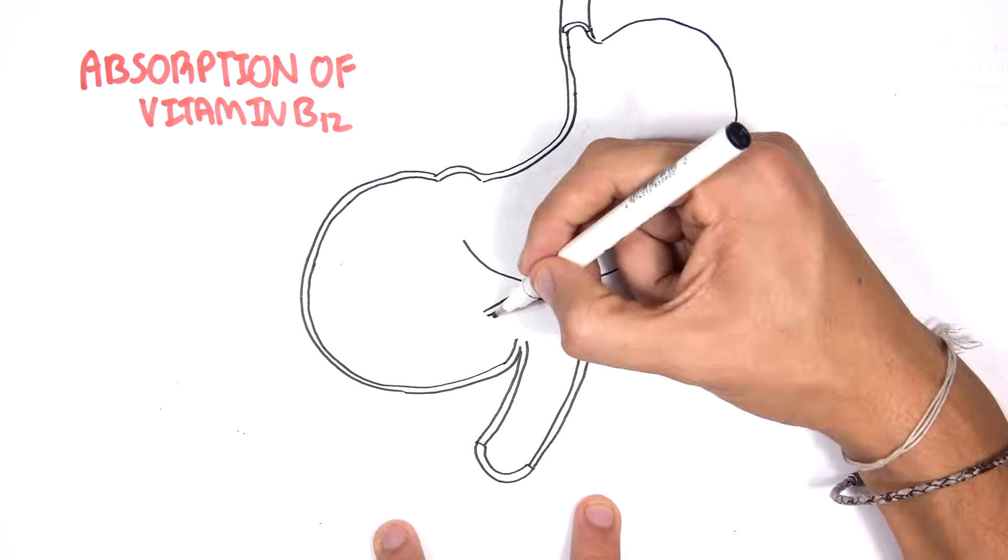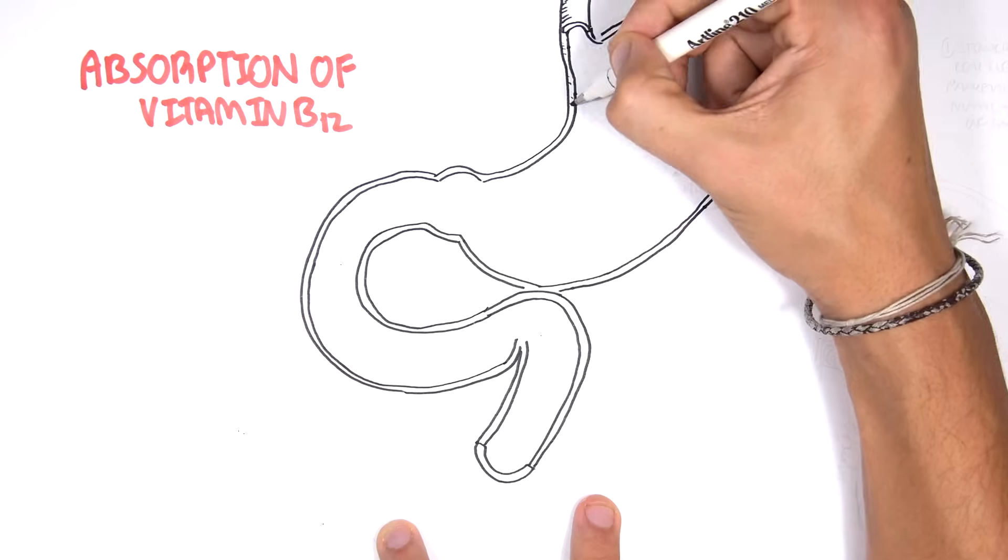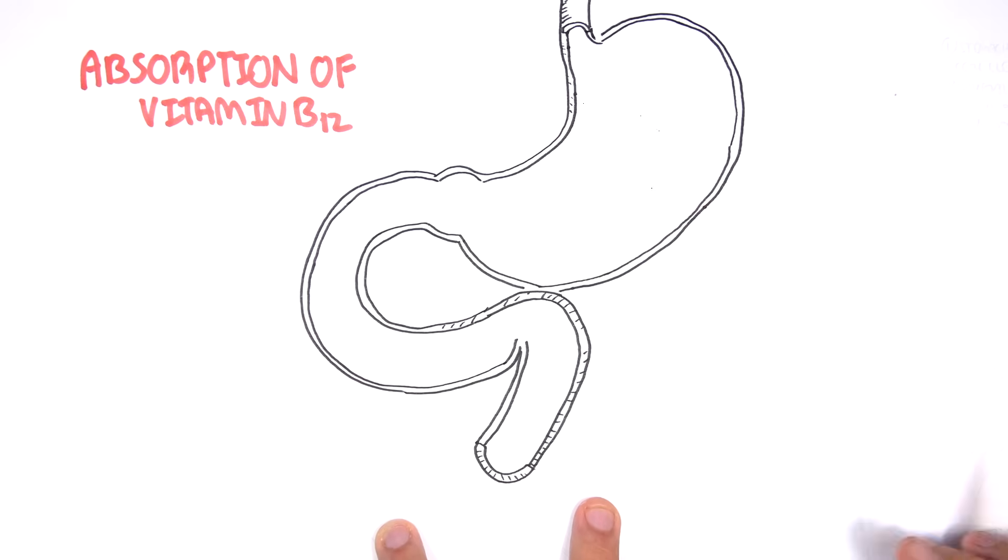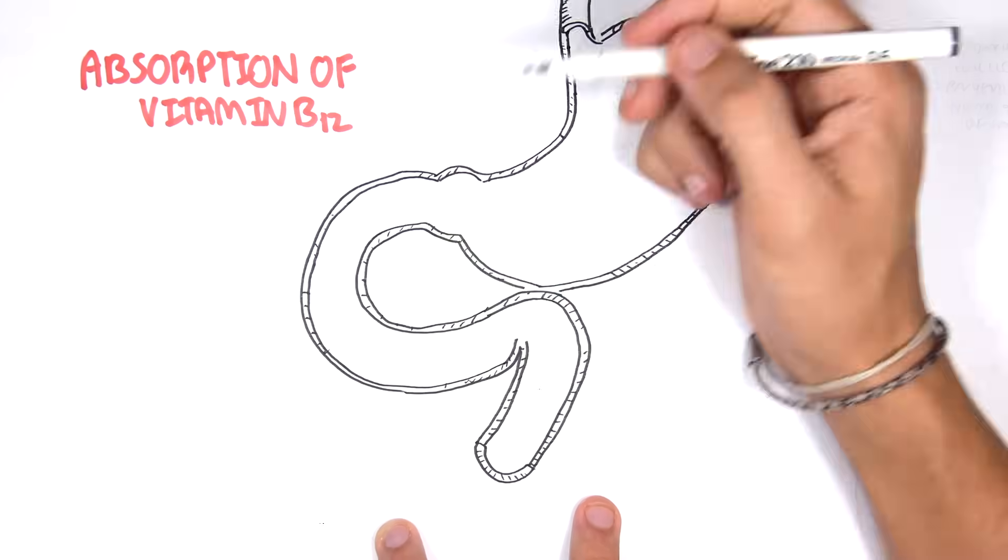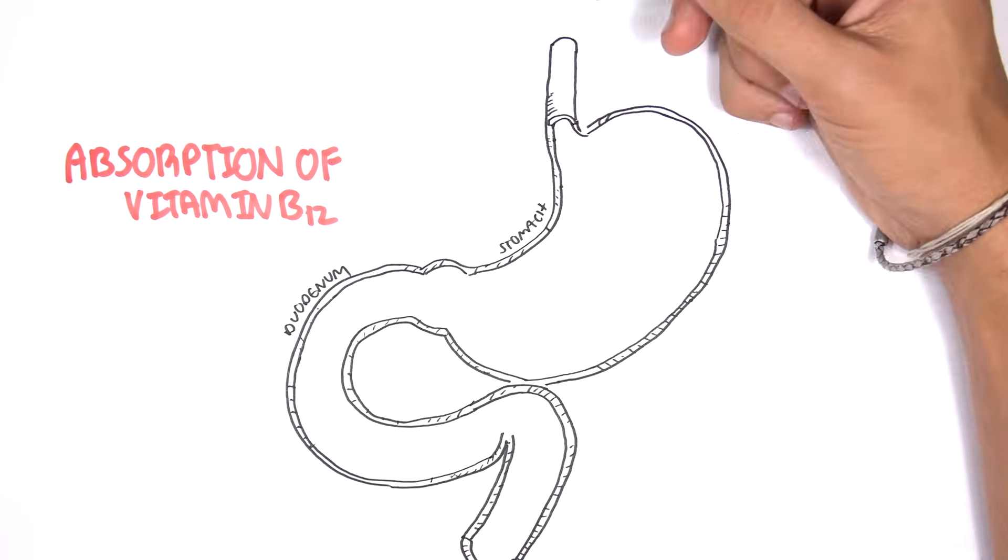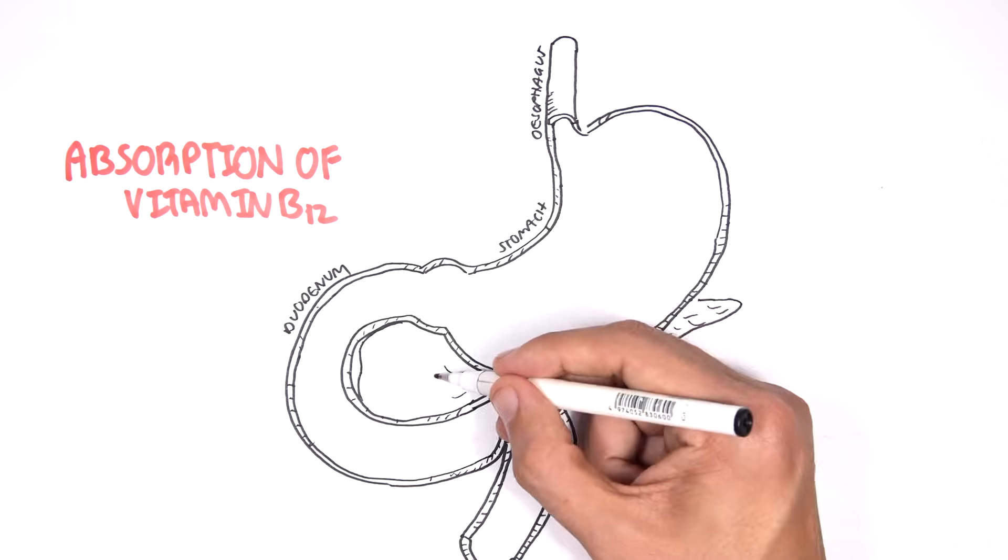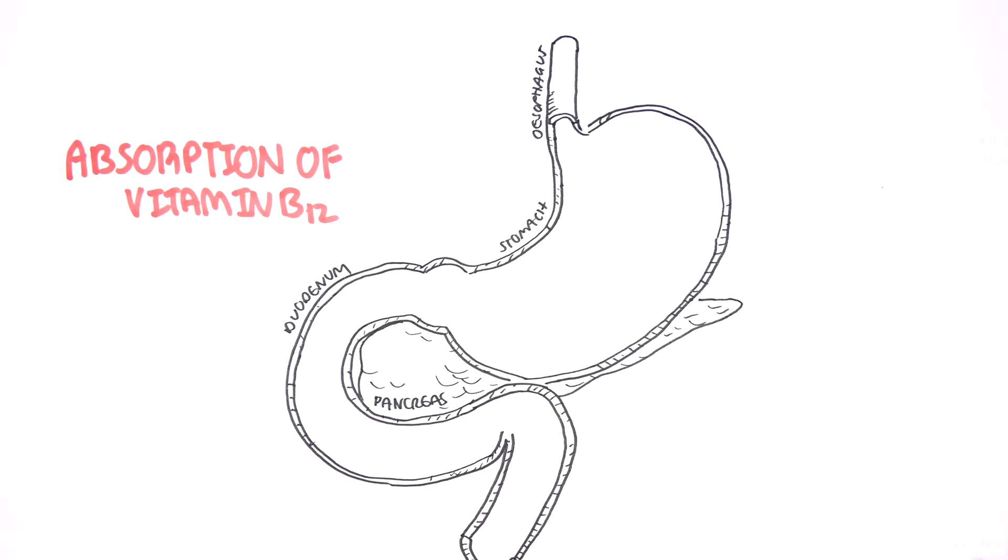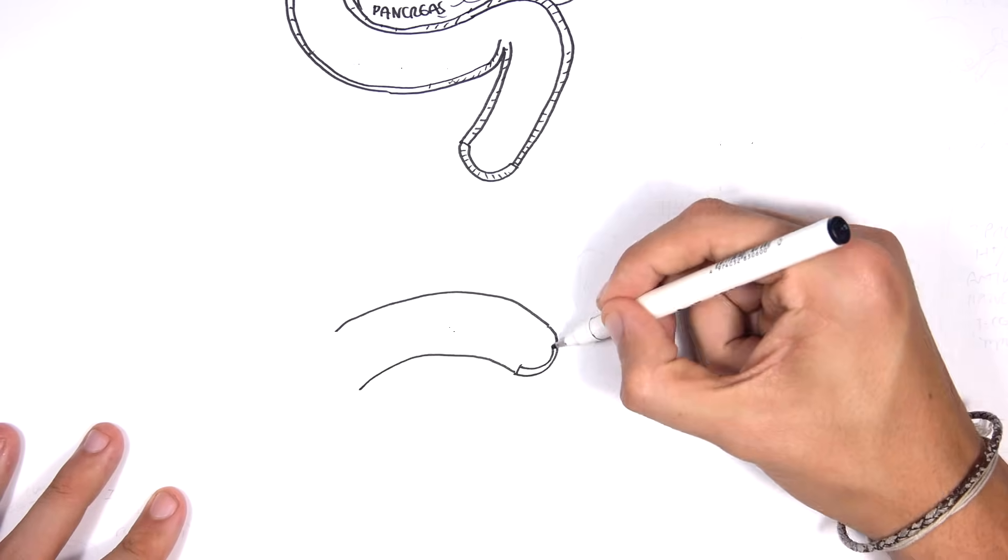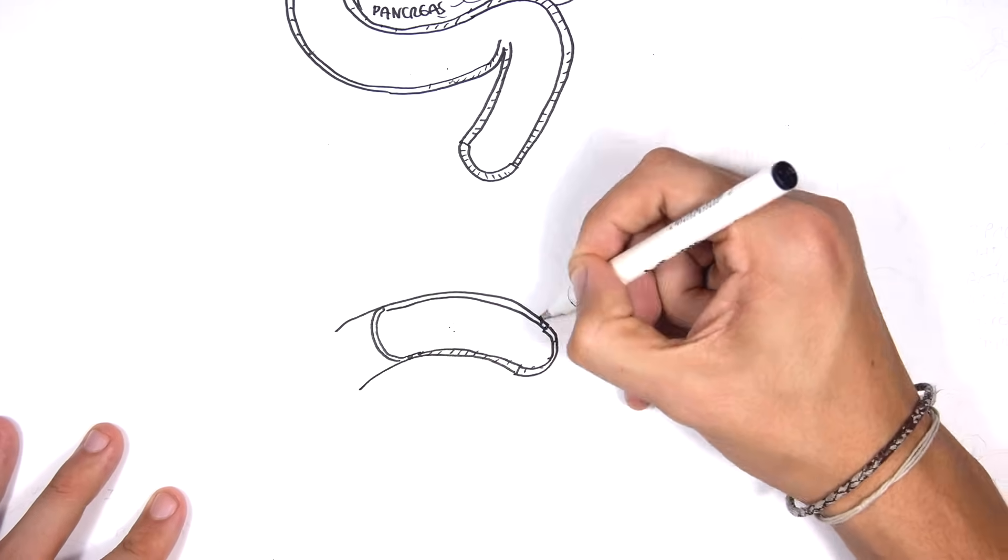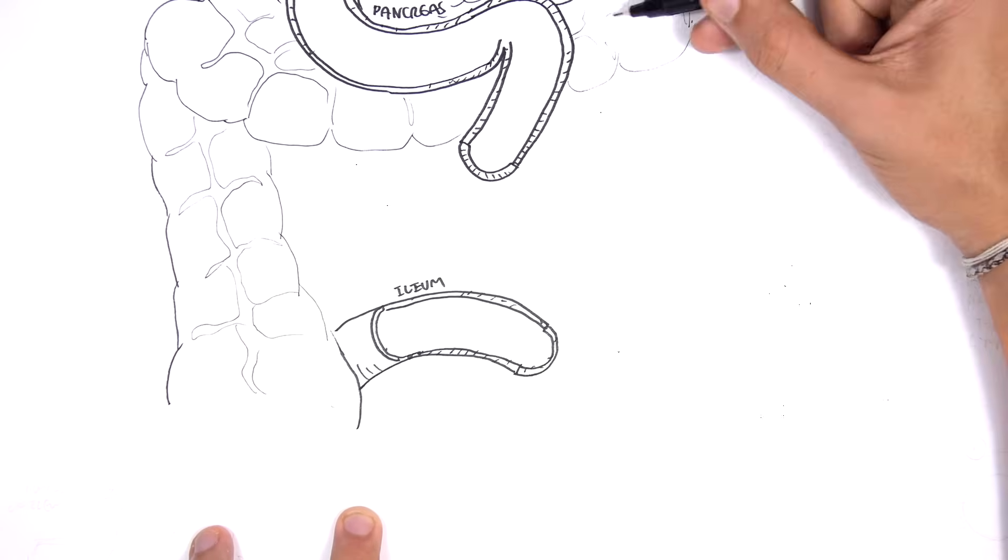So in this video, we're going to look at vitamin B12 absorption, and we begin by drawing here the stomach and the small intestine. Here is the duodenum of the small intestine. Here's the stomach and then the esophagus, and here's the pancreas. The small intestine is divided into three parts: the duodenum, the jejunum, and the ileum. The ileum connects to the large intestine, but we won't really talk about the large intestine in this video.